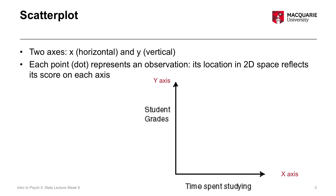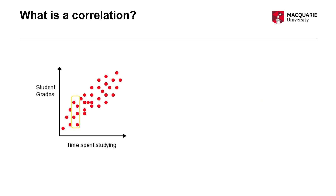We have as many points on the graph as we have observations — so if we have a hundred people in our data set, we would have a hundred points in the scatter plot. A correlation represents whether there is a clear linear association between two variables. Looking at the individual points, we look to see if there is a trend in the point cloud as we move from left to right. Does it go up, does it go down, is there a general pattern? What we're seeing here is a general positive association between time spent studying and student grades.